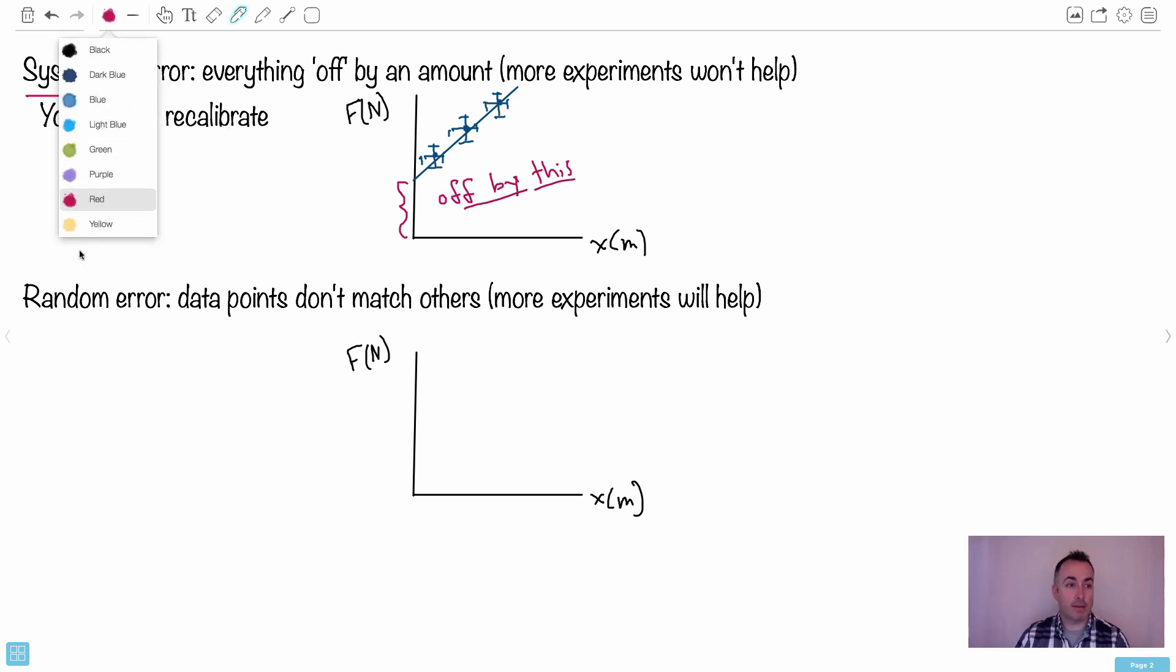By contrast, a random error. This is where the data points don't match the others. So maybe I'll do an example of that here. So I'll just show you some data points here. So let's say I'm drawing some data points. So here's a data point, let's just say, and here's another data point here.